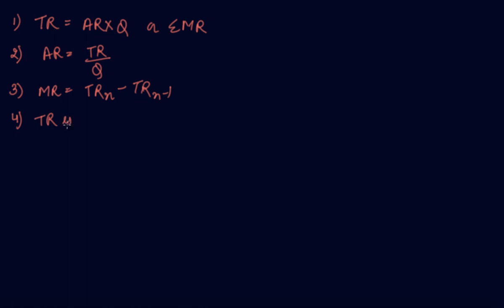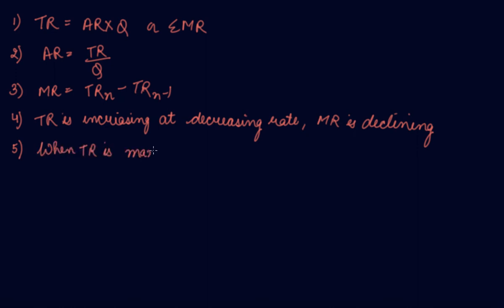When TR is increasing at decreasing rate, your MR is declining. This is what we have done in the graph. Fifth, when TR is maximum, your MR is 0.